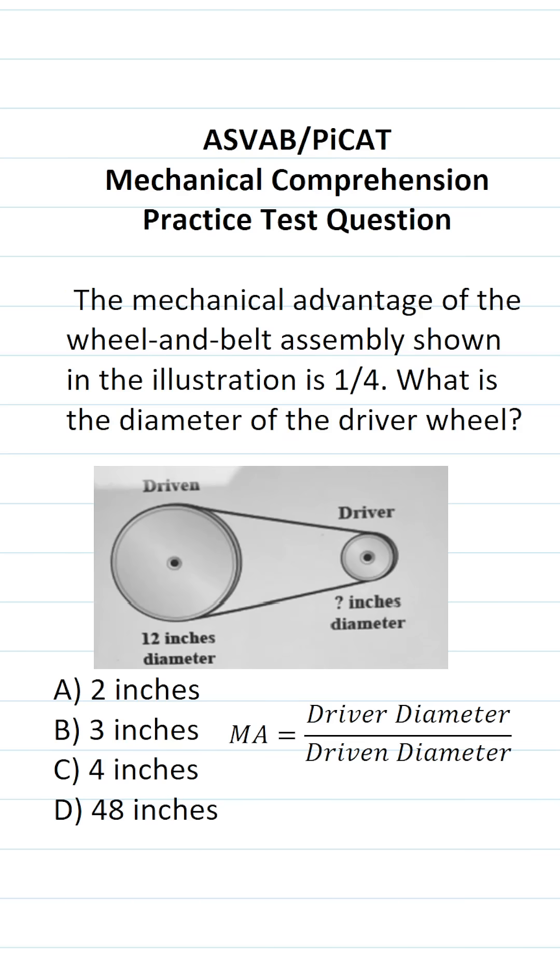This mechanical comprehension practice test question for the ASVAB and PyCat says, the mechanical advantage of the wheel and belt assembly shown in the illustration is one-fourth. What is the diameter of the driver wheel?